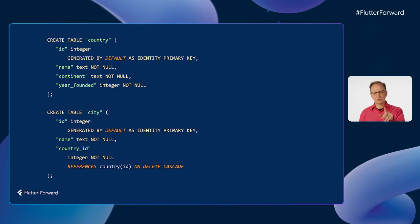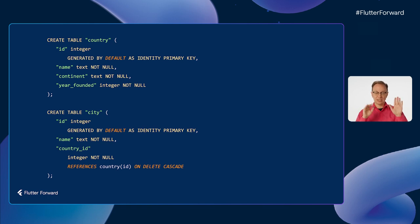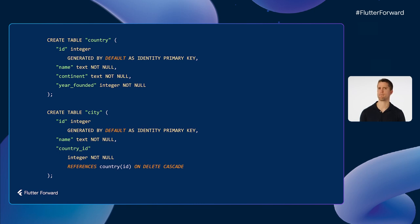Craig, I'm thinking we should have two tables — one for countries and one for cities — and each city record would be related to a country record. I like that schema. Earlier I said relational databases are extremely performant, but every technology is helped out by a good caching strategy. Have you given any thought to that yet? Why, yes I have, Craig. Let's take a look.